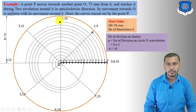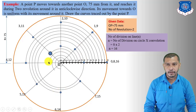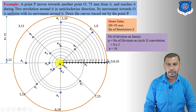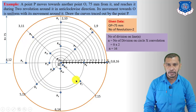Mark the intersection points of the arcs with the divisions of the circle: P0, P1, P2, P3, P4, P5, P6, P7, P8, P9, P10, P11, P12, P13, P14, P15, and P16 at the center. Draw the freehand curve through these points to obtain the Archimedean spiral for two convolutions. The method for normal and tangent remains the same.